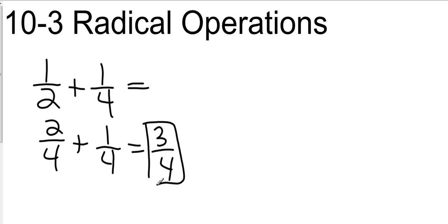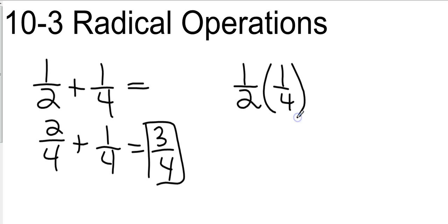Are the rules the same with subtraction? Yes — addition and subtraction must have a common denominator. Are the rules the same with multiplication? No. We found out yesterday and the day before: when we multiply radicals, all we do is multiply the two numbers underneath the radicals, just like you would do with fractions.